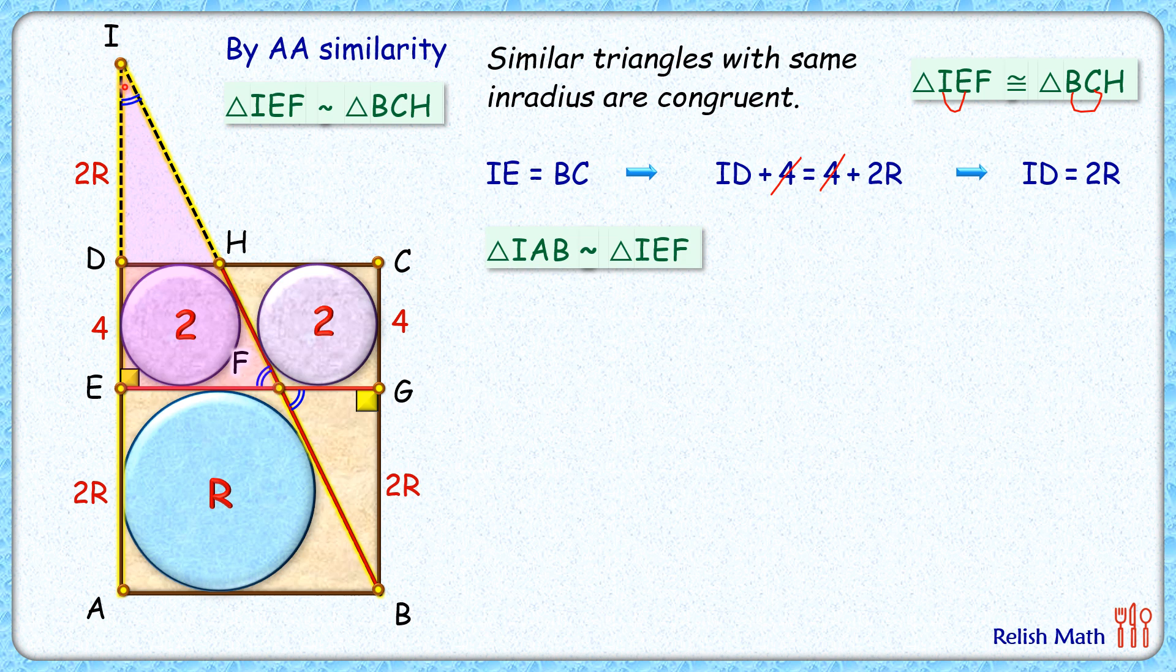As the triangles are similar, the ratio of corresponding sides will be equal. Now in this particular case, I am not taking only the ratio of corresponding sides, but actually in similar triangles, the ratio of corresponding sides is equal to the ratio of corresponding inradius, ratio of corresponding circumradius, ratio of corresponding altitudes, ratio of corresponding medians. All these ratios are equal in similar triangles. So here I am comparing the ratio of sides.